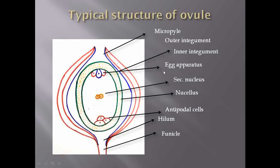At the micropylar end of the ovule or embryo sac, there is an egg apparatus consisting of a centrally situated egg cell and two lateral synergid cells. There is also the centrally situated secondary nucleus. At the chalazal end of the ovule, there is a presence of antipodal cells. Within the embryo sac, the types of cells present are: egg, synergids, secondary nucleus, and antipodal cells.